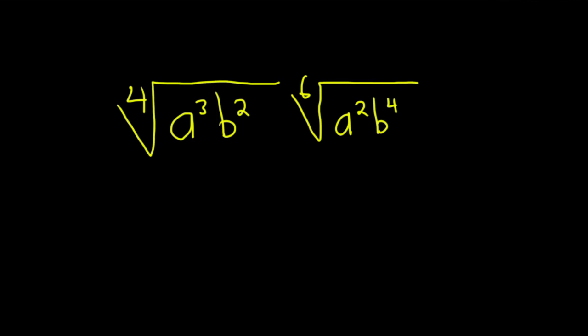Hi, in this problem we are going to multiply these two radicals. We've got the fourth root of a cubed b squared times the sixth root of a squared b to the fourth.